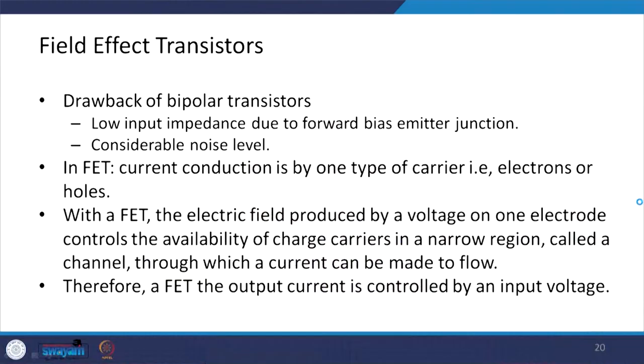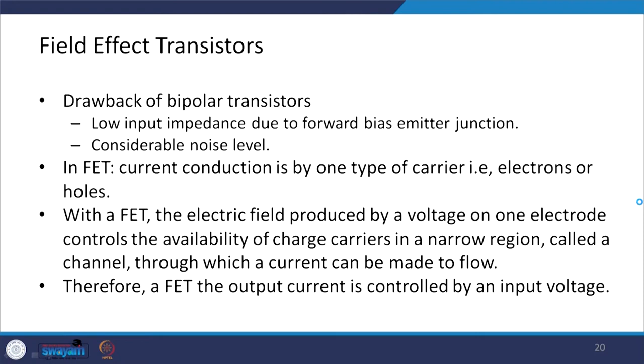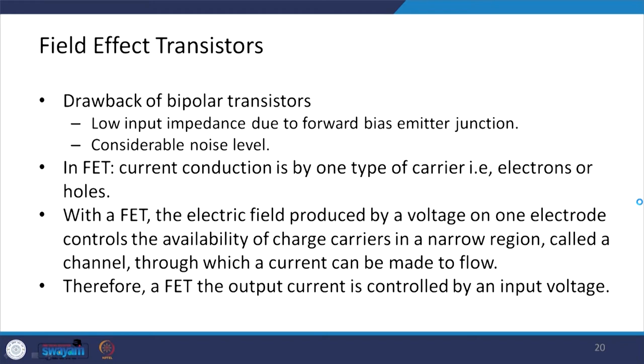Now let us look at field effect transistors. Bipolar transistors have certain drawbacks, including low input impedance due to the forward-biased emitter junction and a considerable noise level. In field effect transistors, current conduction is by any one type of carrier — either electrons or holes — whereas in BJTs, current conduction involves both holes and electrons. With FETs, an electric field produced by a voltage on one electrode controls the availability of charge carriers in a narrow channel through which current flows. Therefore, in FETs, the output current is controlled by the input voltage.